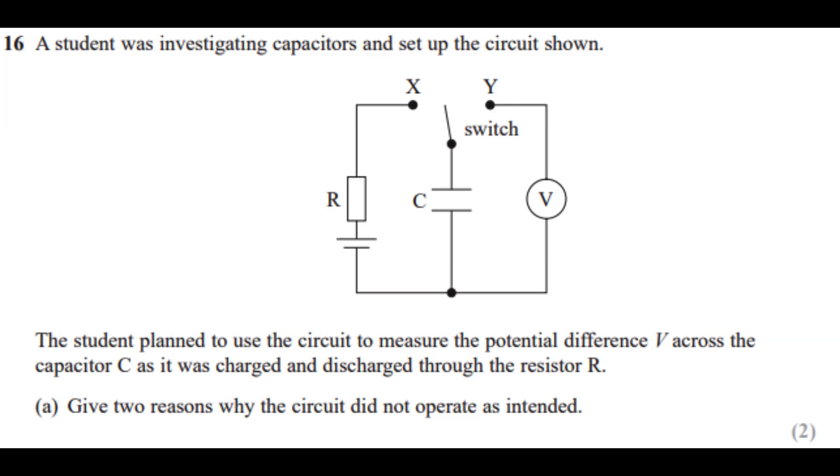They're in opposite places. You can write: when charging, the voltmeter is not across C—it's in the Y place where there's discharging. And when discharging, the resistor isn't in the circuit, but we need the resistor while discharging, which should be at Y, not X.